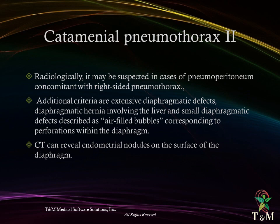Radiologically, catamenial pneumothorax may be suspected in cases of pneumoperitoneum concomitant with right-sided pneumothorax. Additional criteria include extensive diaphragmatic defects, diaphragmatic hernia involving the liver, and small diaphragmatic defects described as air-filled bubbles corresponding to perforations within the diaphragm. CT scan reveals endometrial nodules on the surface of the diaphragm.